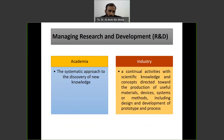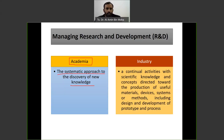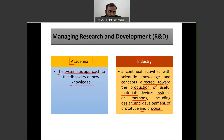Managing Research and Development has two different definitions from different perspectives. The first is academia — researchers, academics, lecturers, higher institution people. It is the systematic approach to the discovery of new knowledge. For industry, it is a continual activity with scientific knowledge and concepts directed toward the production of useful materials, devices, systems or methods, including design and development of prototypes and processes.